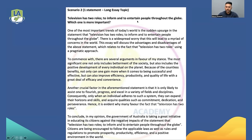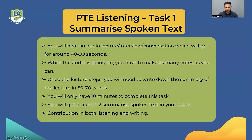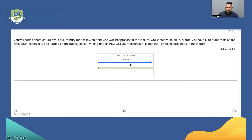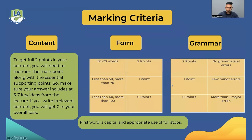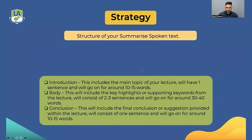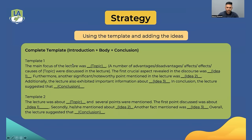For example, if you get a topic like: 'Television has two roles — to inform and to entertain people throughout the globe. It also helps to spread news. Which one is more important?' You have two statements and a question. Write the first statement in blank one, the second statement in blank two, the first statement again in blank three, and the second statement again in blank four. Follow it blindly and you will be 100% fine. The last task where you can use a template is PTE Listening Summarize Spoken Text — an easy task where you write a summary of 50 to 70 words and are given 10 minutes.